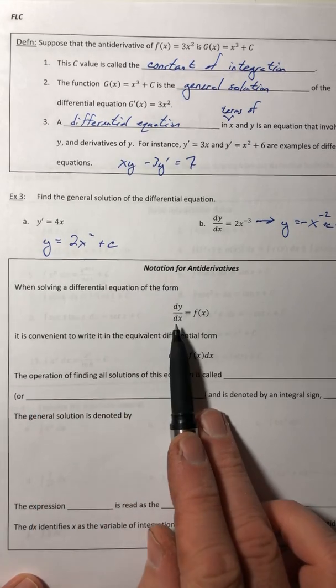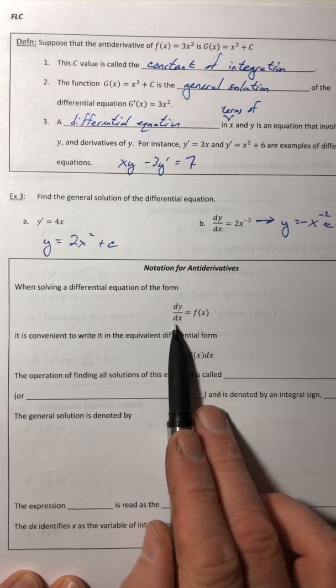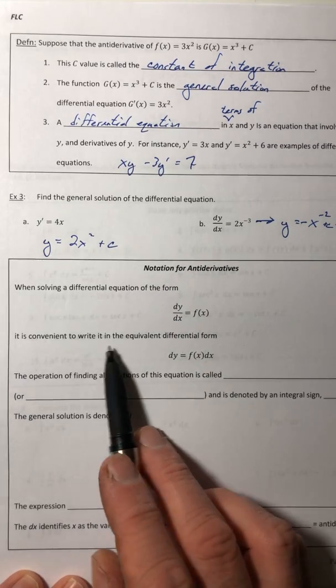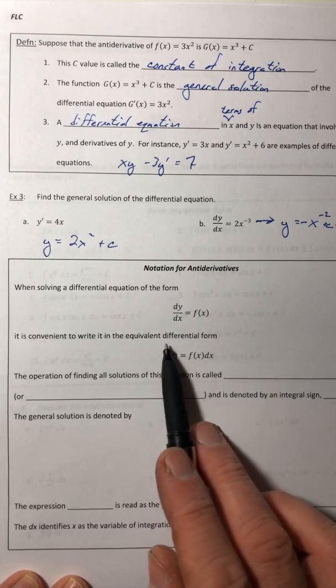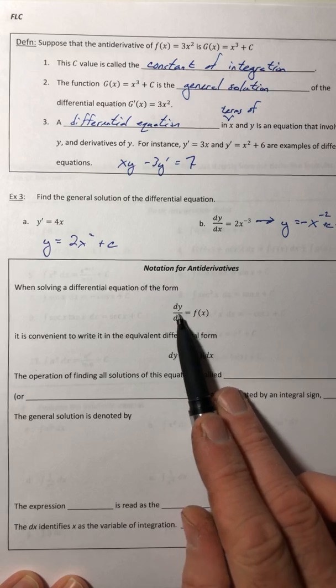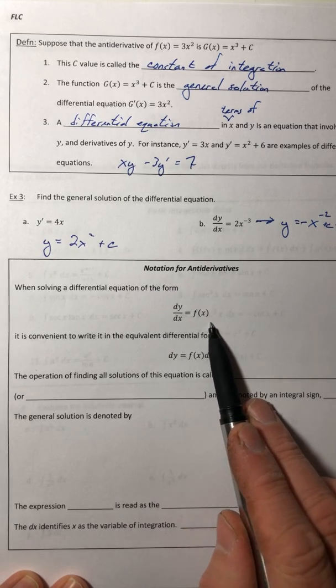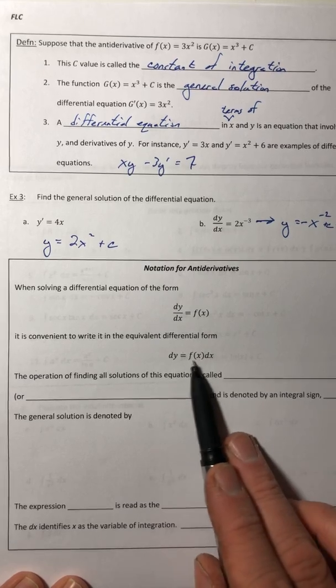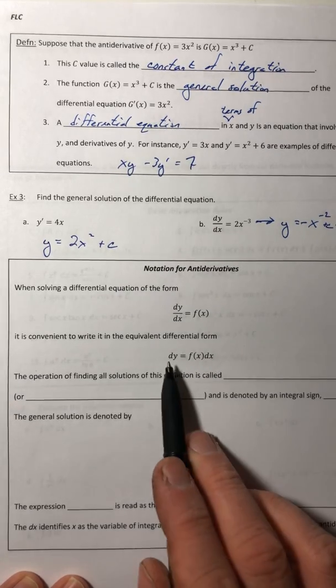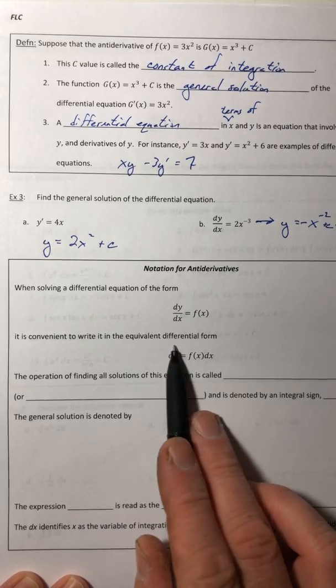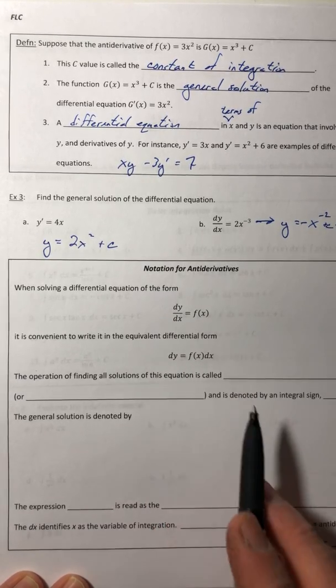So when solving a differential equation of the form dy/dx equals f of x, it's really convenient to write it in the equivalent differential form. So we're essentially taking this dx and moving it over here next to f of x. And what that does is that separates your variables from one side to the other. So your y's are on the left and your x's are all on the right.